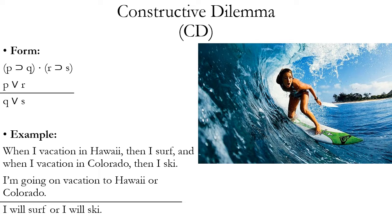Constructive dilemma is an implication rule that starts with two premises. One is a conjunction of conditionals, and the other is a disjunction whose disjuncts match the antecedents of those conditionals. The general form is: (P horseshoe Q) dot (R horseshoe S), paired with P wedge R. This allows you to conclude a disjunction formed out of the consequents of those two conditionals — Q wedge S.